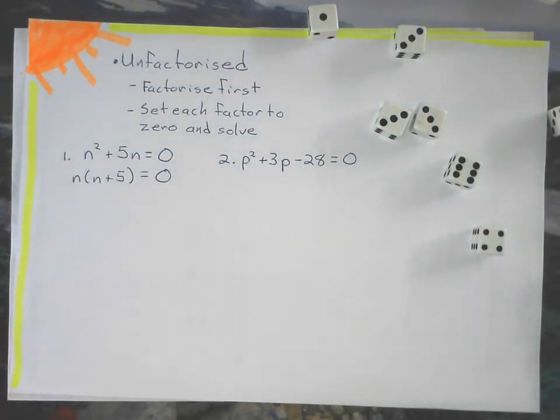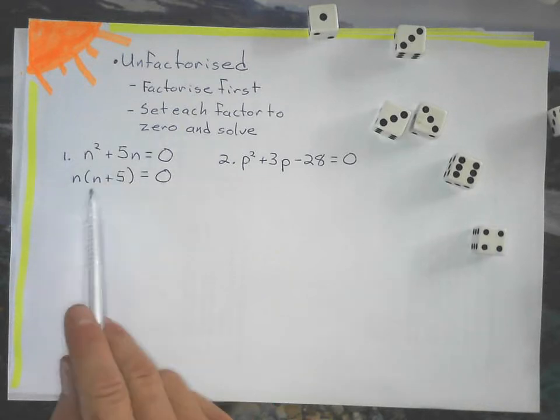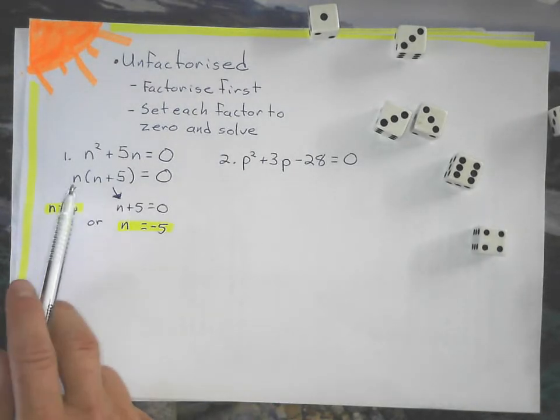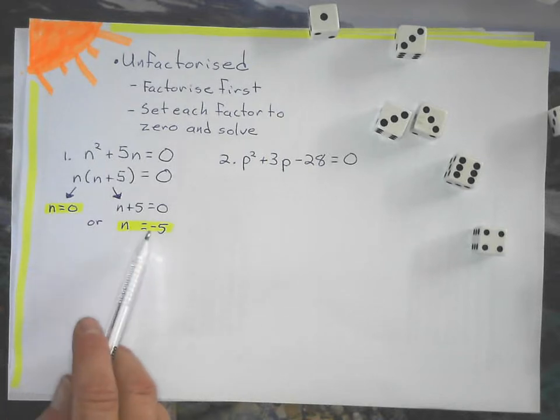That's what I get. Now I set each factor to zero and solve, and I get two solutions: n equals zero or n equals negative 5.